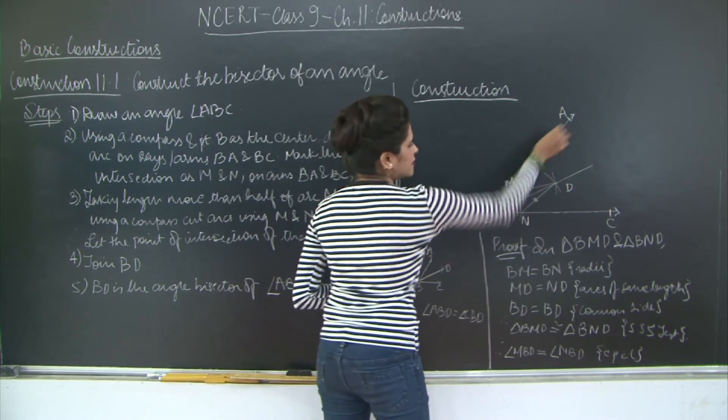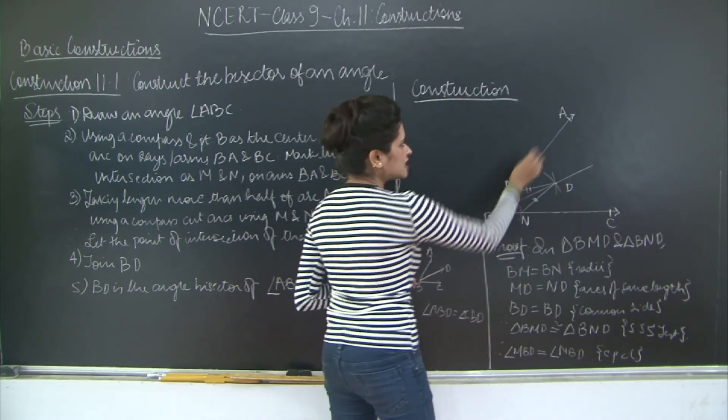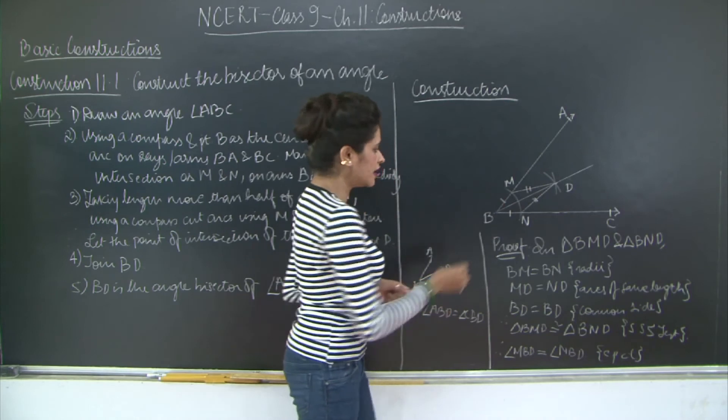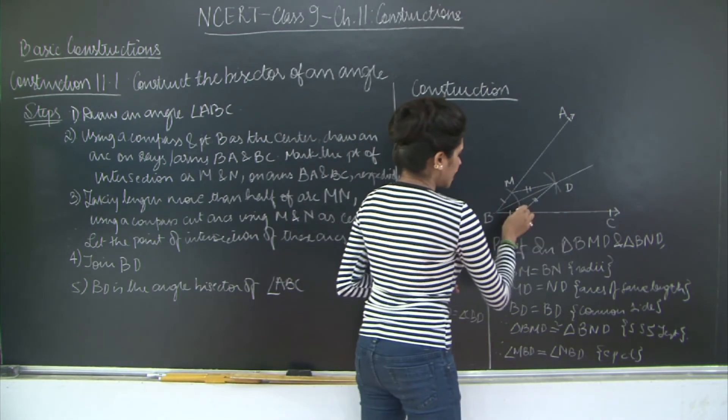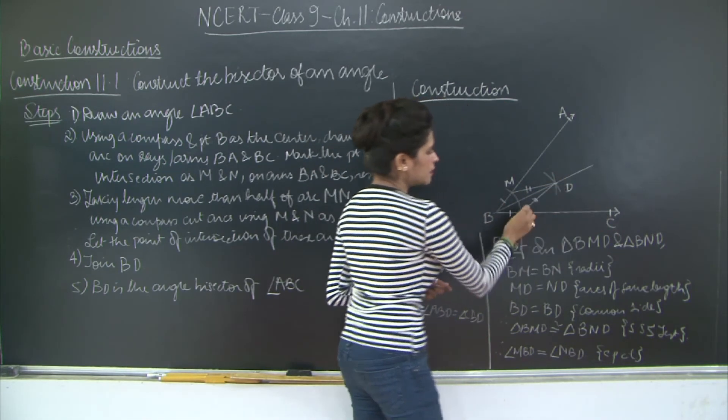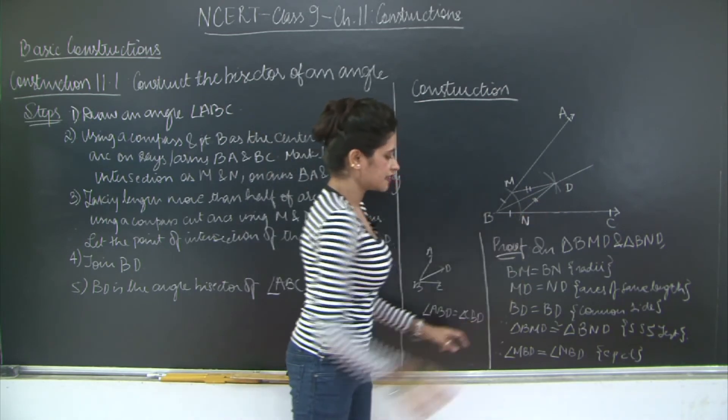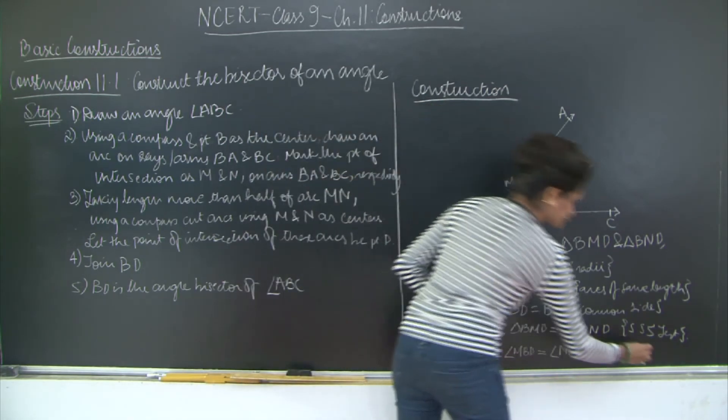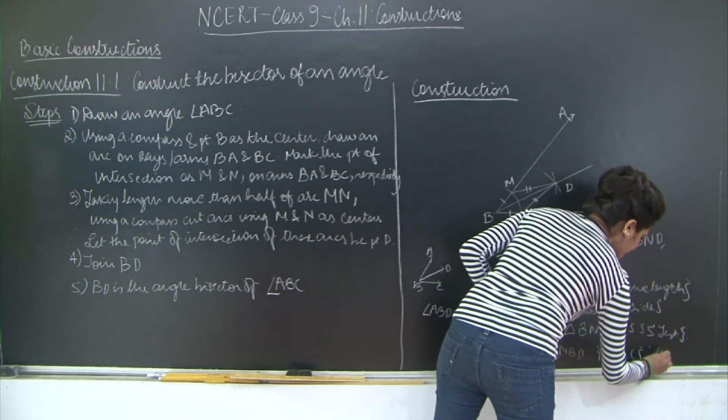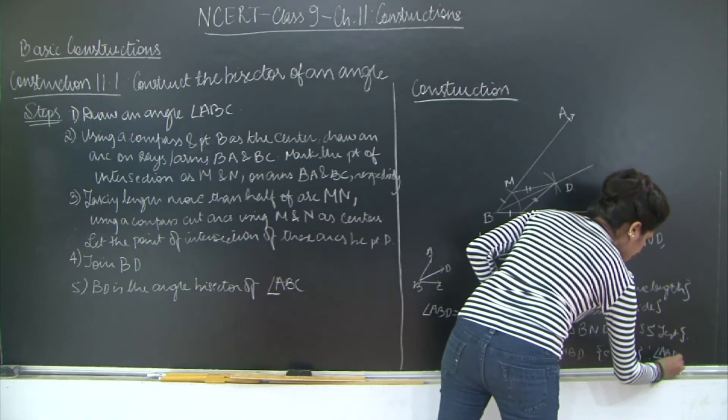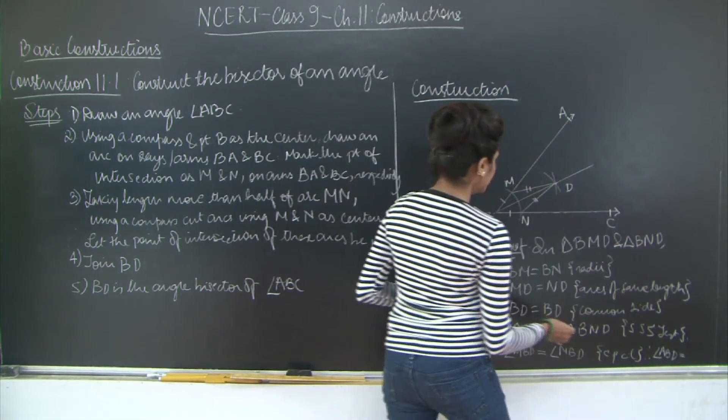But MBD is the same as ABD. Right? Because M lies on the line segment AB. Similarly NBD is the same as CBD because N lies on the line segment BC. Therefore I can say angle ABD is equal to angle CBD.